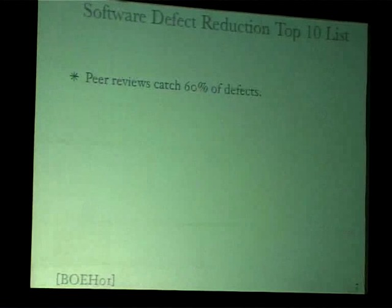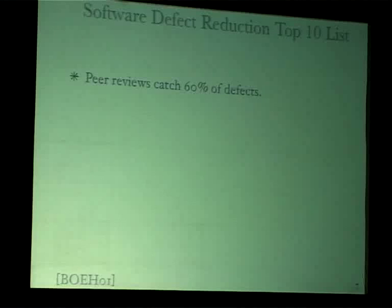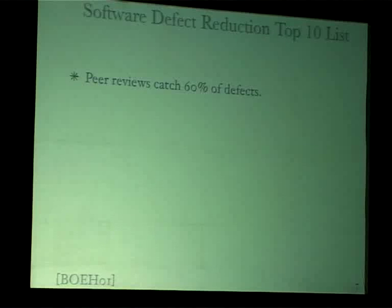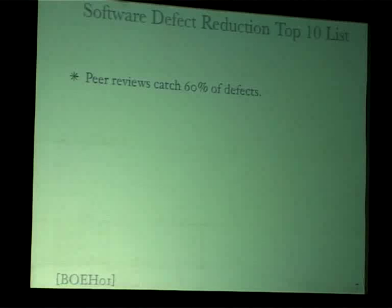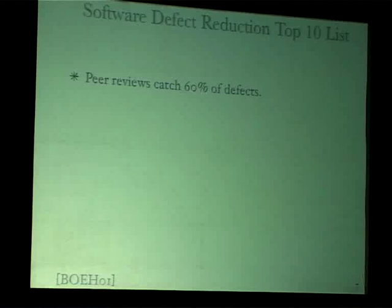Peer review catches 60 percent of defects. Given a choice between writing unit tests and doing code reviews, I strongly prefer code reviews. I've done this on projects and I cannot believe anything that gives enormously better results than code reviews. Code review gives an opportunity for other people to look at your code — that means they are reading your code. The only easy way to create readable code is to read it. When somebody reviews your code, if they cannot understand it, they'll give you the feedback.